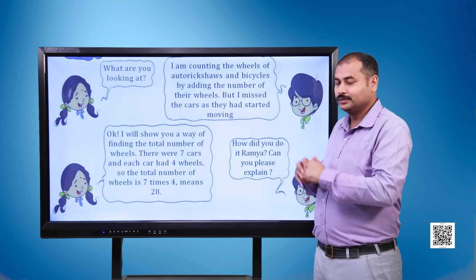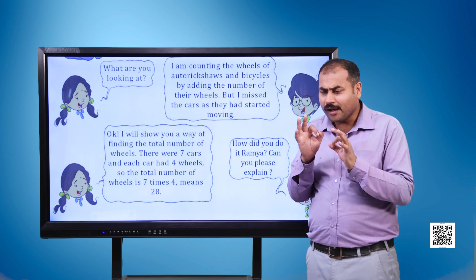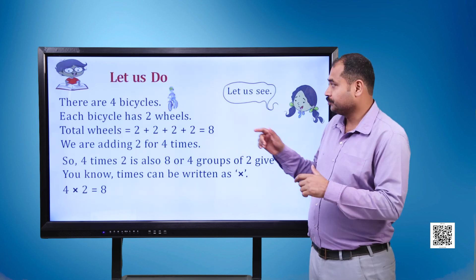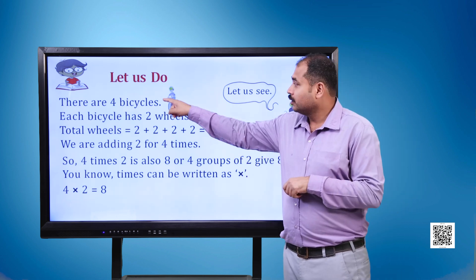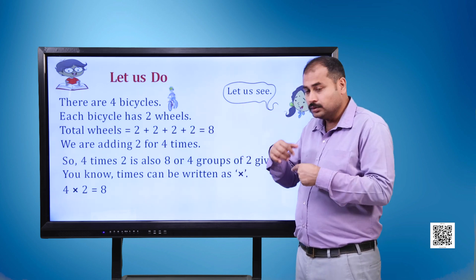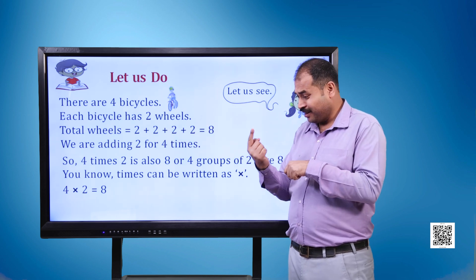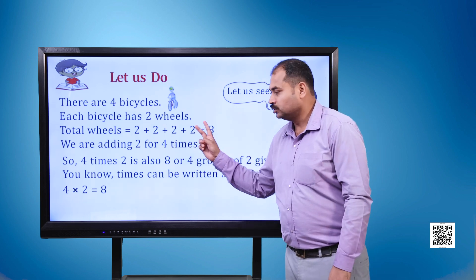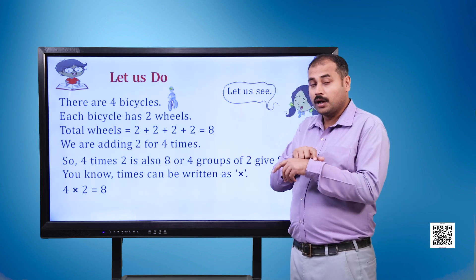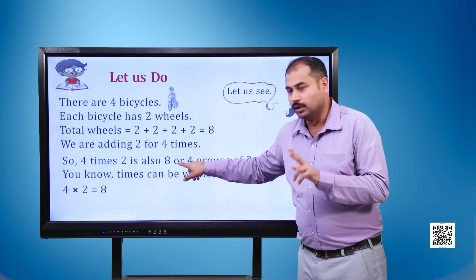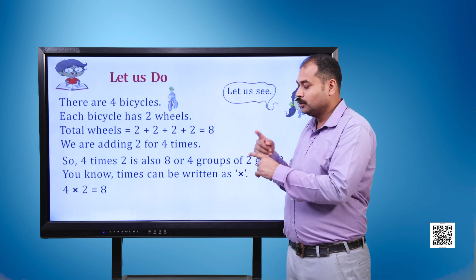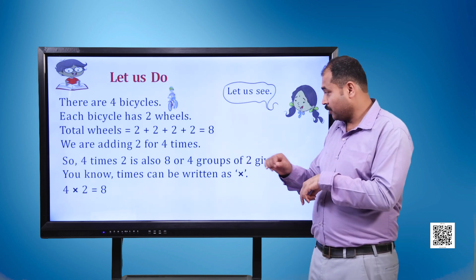The boy says, 'How did you do it, Ramya? Can you please explain?' Ramya says, 'Let us see. There are 4 bicycles and each bicycle has 2 wheels. Total wheels equal to 2 plus 2 plus 2 plus 2, which is equal to 8. So we are adding 2 four times. So 4 times 2 is also 8, or 4 groups of 2 give 8. The times sign is written as x, the multiplication sign, meaning into. So 4 into 2 equals 8.'